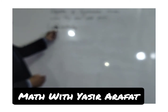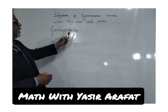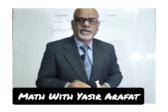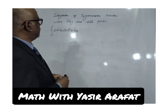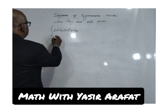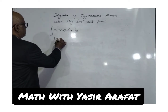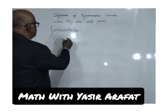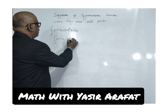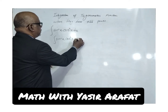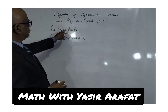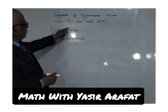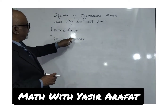Here we have sin²x and cos³x. So we have the odd power here. The important technique related to odd power is: if we have the odd power, we have to separate a linear function from the function having the odd power. So for cos³x, we separate it as cos²x times cos x.